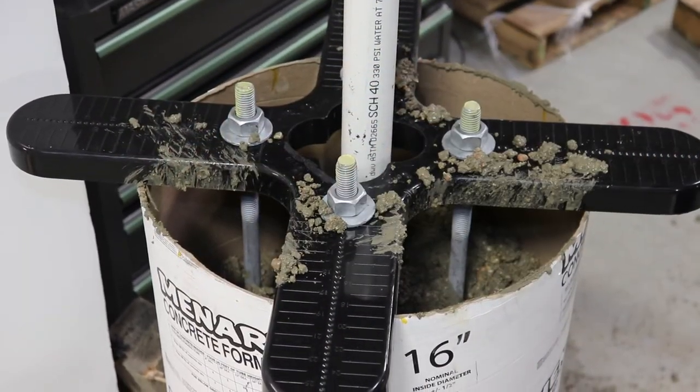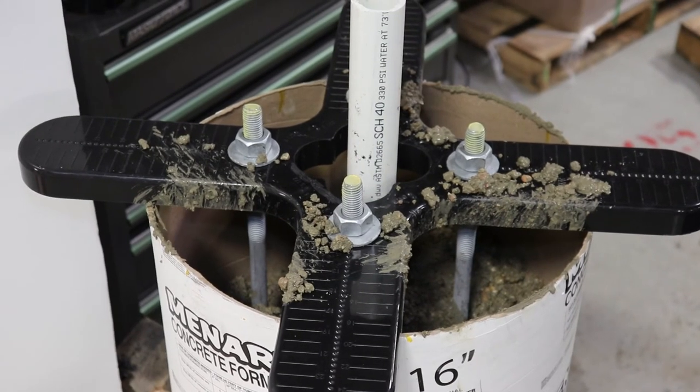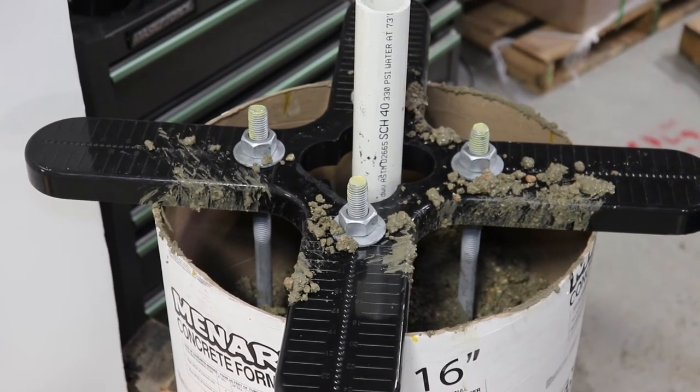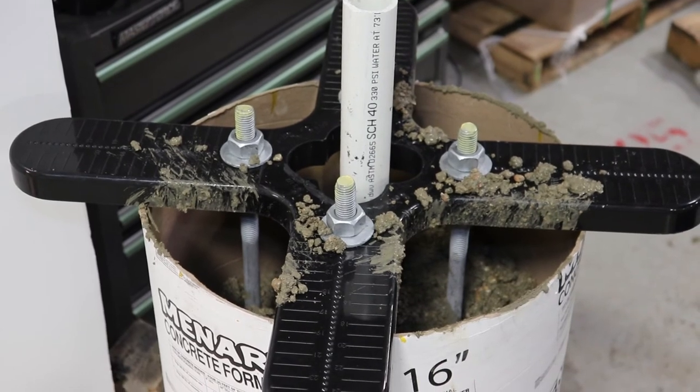Lightmarch's universal anchor bolt template tool is made from durable extra thick ABS plastic and can be used multiple times for different bolt circle sizes.